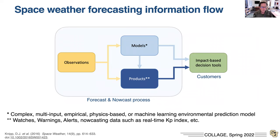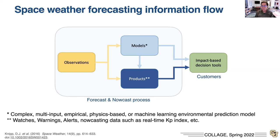The forecast and nowcast process flows from observations to models to products, then to customers who make decisions based on their own impact-based decision tools. Models in this context can be complex multi-input empirical or physics-based models, and increasingly are looking like machine learning prediction models. Products include watches, warnings, alerts, nowcasting data, and more.